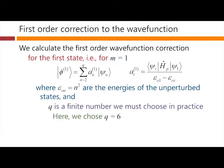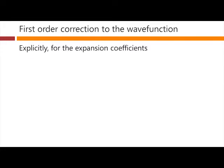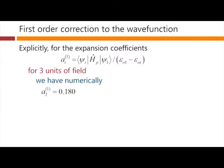Here, we're going to choose q equal to 6. But actually, it doesn't make much difference if we make q a little bit smaller than that. So explicitly for our expansion coefficients then, for our a_i1s, for three units of field, we have numerically these results. So a_21 is 0.18, a_31 is 0, and a_41 is 0.003.